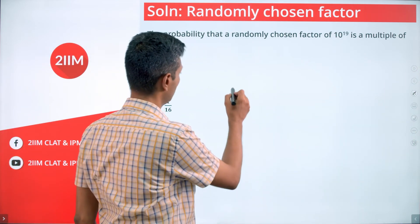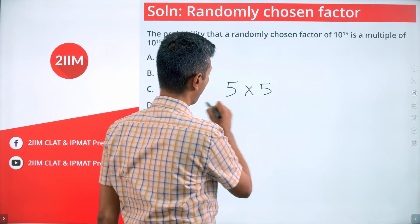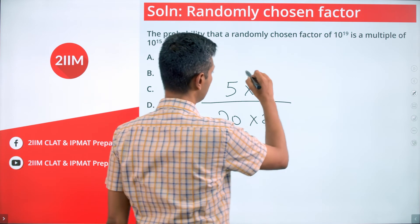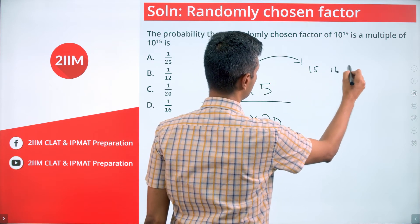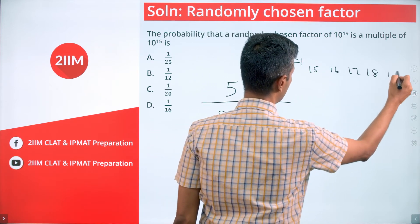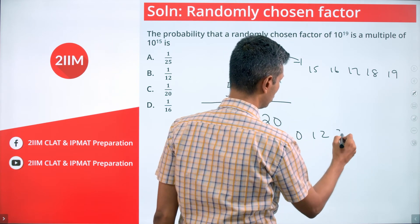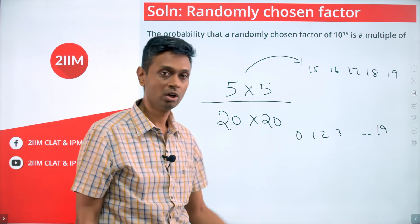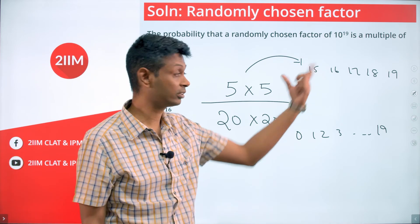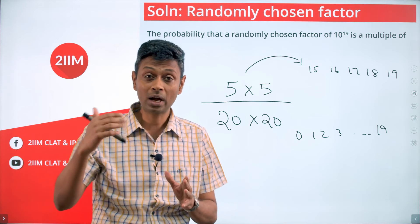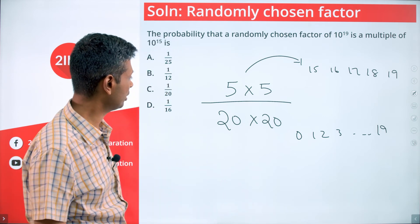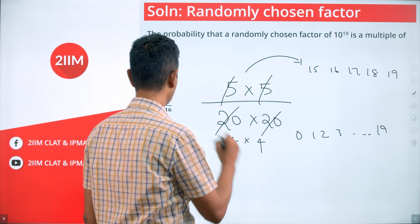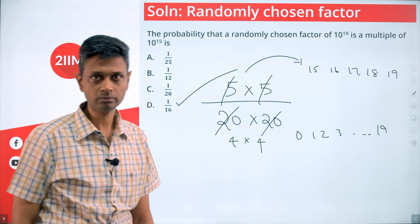Finally, the probability we are looking for is 5 into 5 by 20 into 20. Here the powers take value 15, 16, 17, 18, 19. Here powers take value 0, 1, 2, 3, all the way to 19. Given that you are selecting one out of these, what is the probability that will happen to be this for both the power of 2 and the power of 5? 5 into 5 by 20 into 20 is 1 by 16. Lovely.